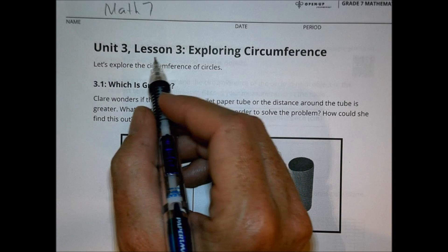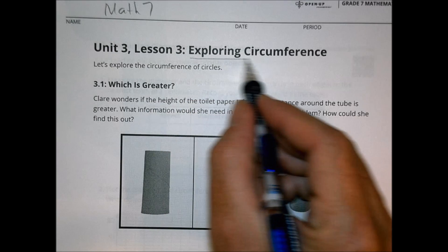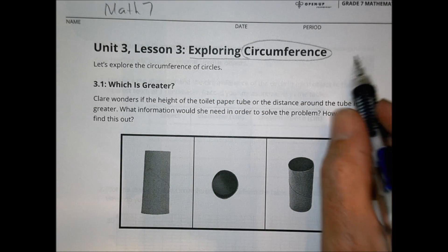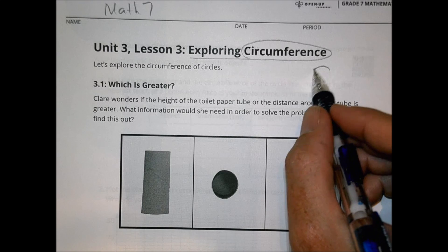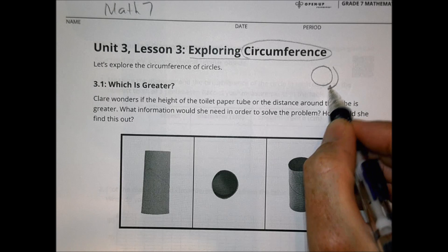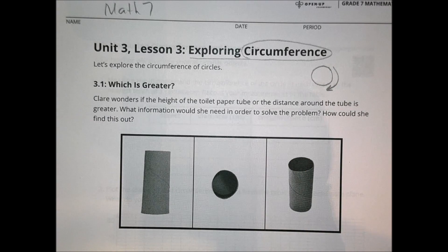Hey there, this is Math 7, Unit 3, Lesson 3, Exploring Circumference today is what we're talking about. We're going to talk about the circumference, as we mentioned before, is going to be how we measure the distance around a circular object there.